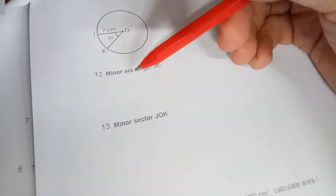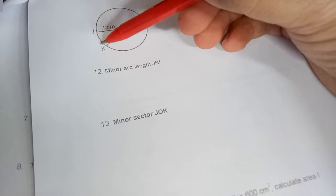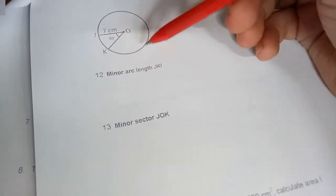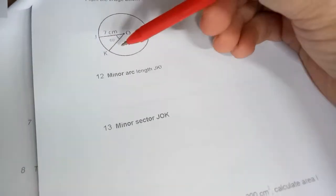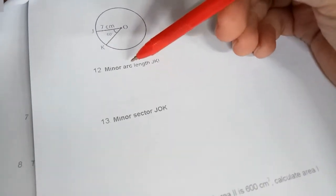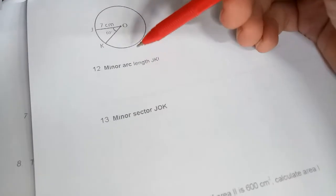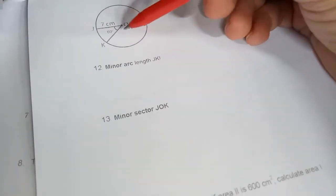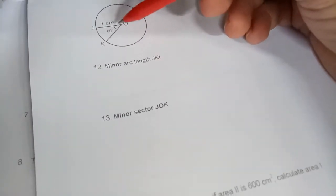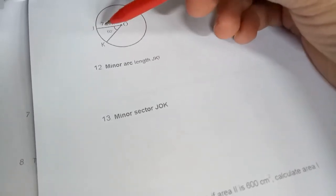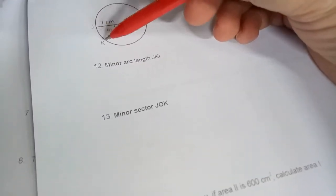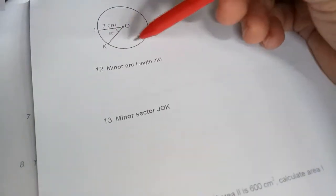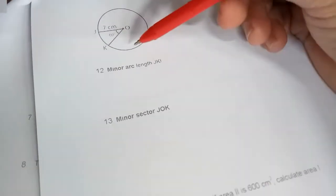Minor means the small one. We actually have two arcs of JK - this one here and this one here, the big one. Because it says minor arc, we use this one. The basic concept of how to calculate an arc: we know that a full turn of a circle is 360 degrees. When we calculate the arc, notice that the arc is part of the circumference of the circle.